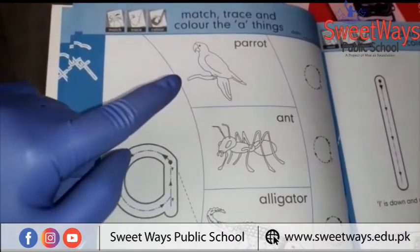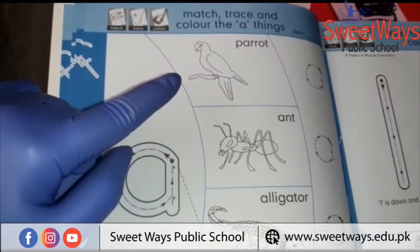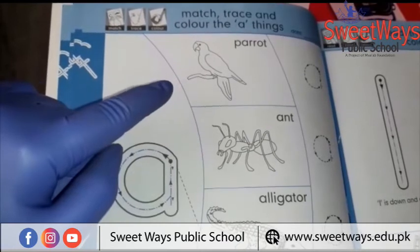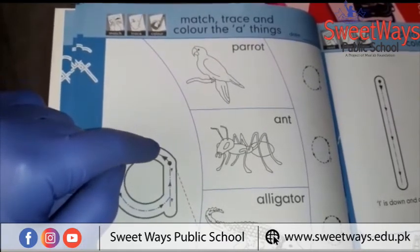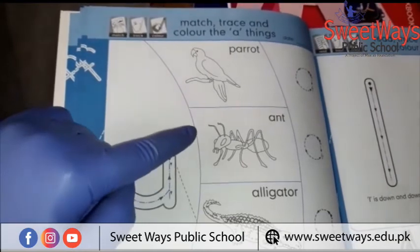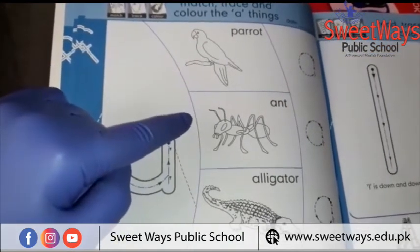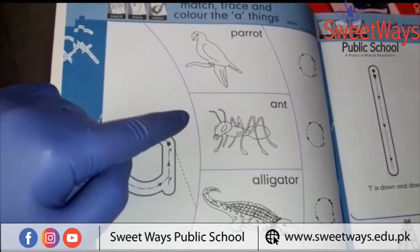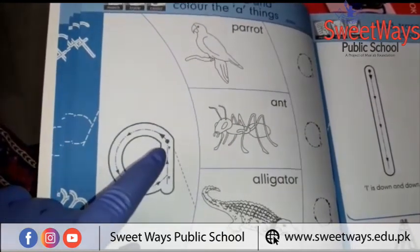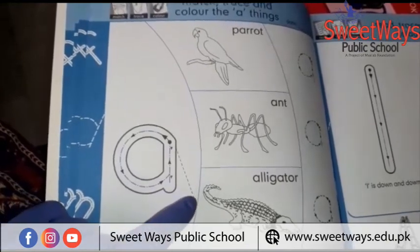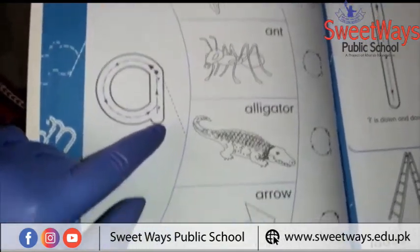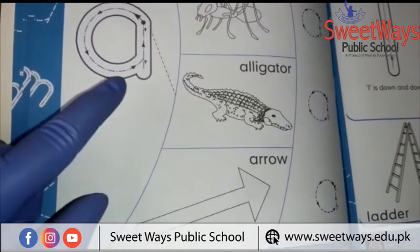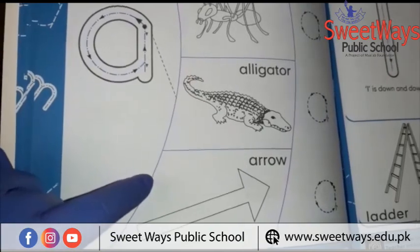A parrot — the beginning sound of parrot is not A, that's why the parrot will not be matched with A. A - ant — the beginning sound of ant is A, we will match the ant with A. A - alligator — now we will match the alligator with A. A - arrow — the beginning sound of arrow is A, that's why we will match the arrow with A.